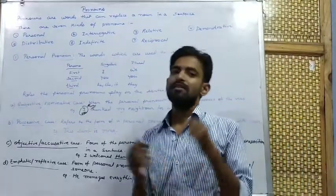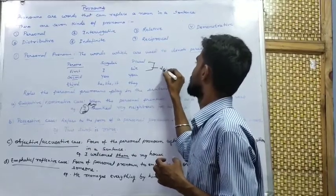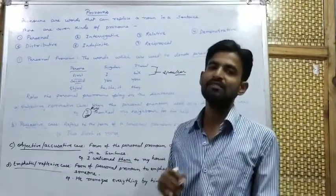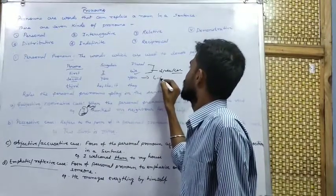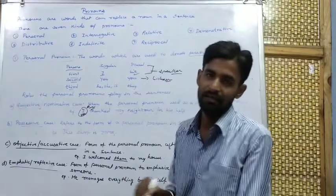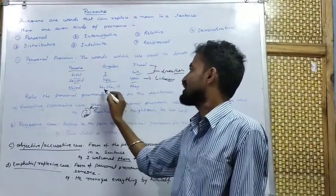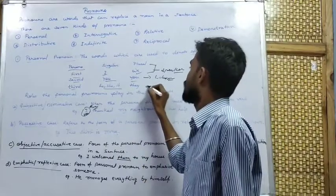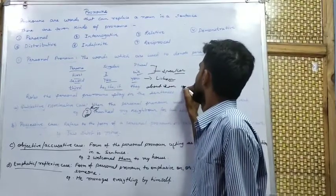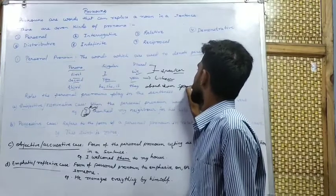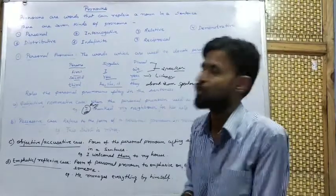First person refers to the speaker. In singular, 'I' is the first person — meaning I and we. Second person refers to the listener — the one who listens to us. And the third person refers to the one about whom the speaker is talking — about whom the speaker is talking is the third person.